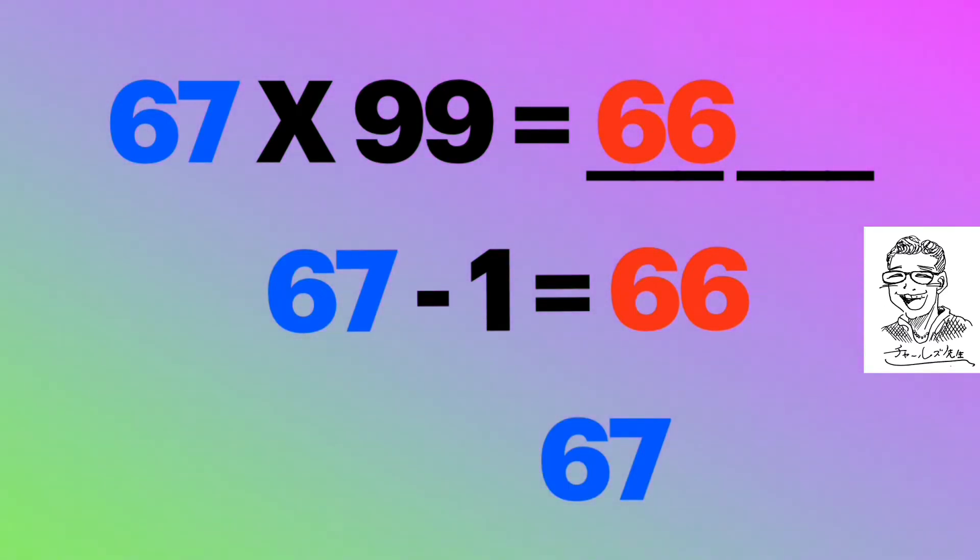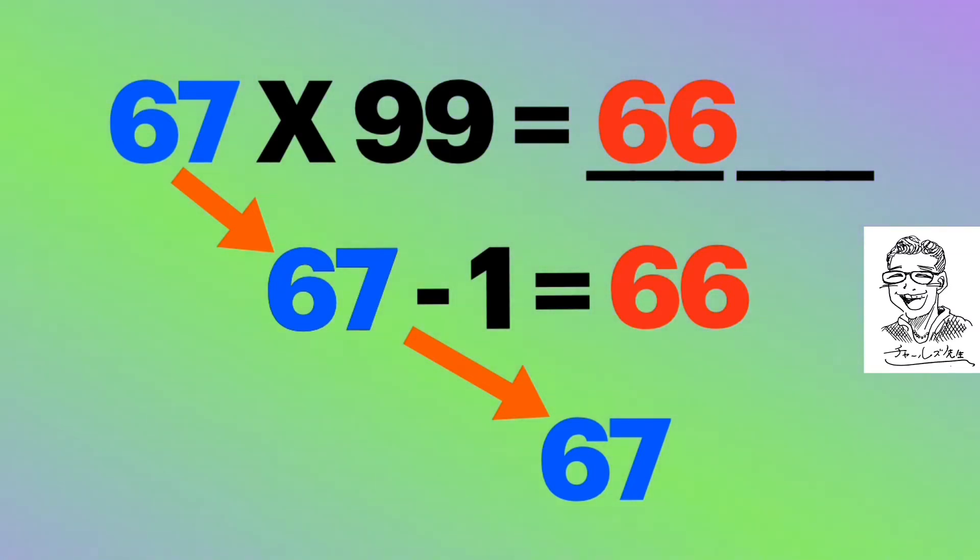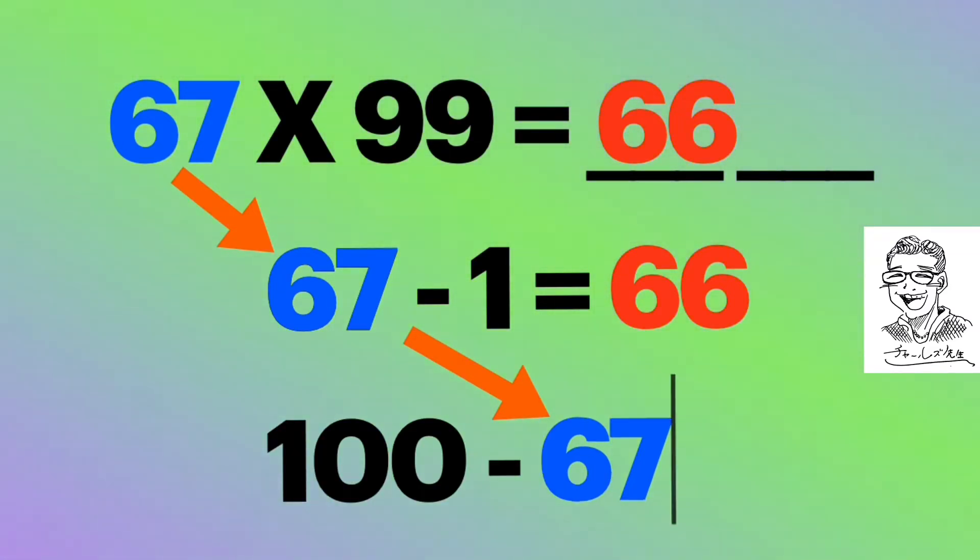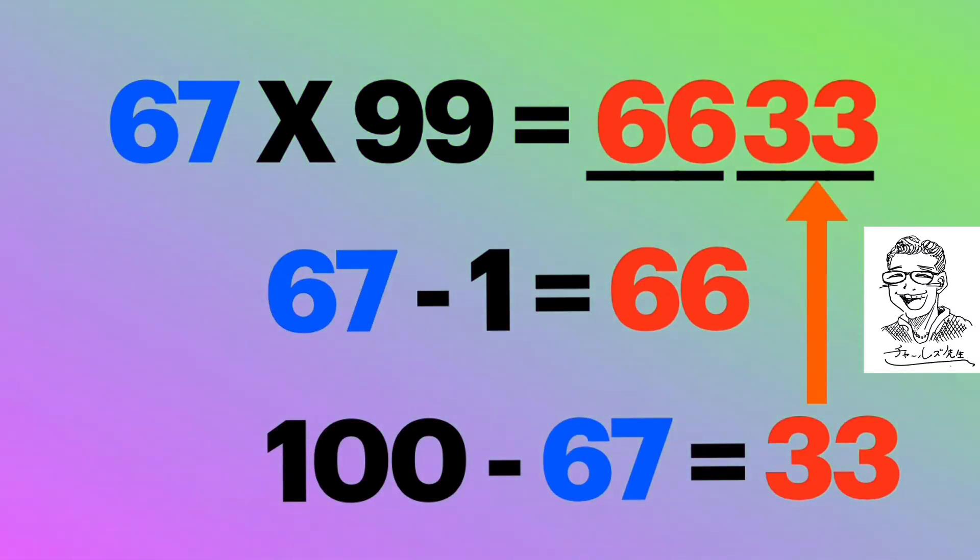And then you are going to deduct 67 from 100. 100 minus 67 equals 33. And the answer is 6633.